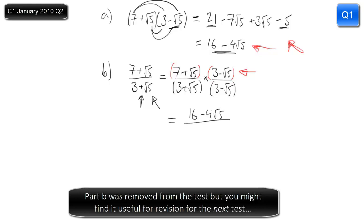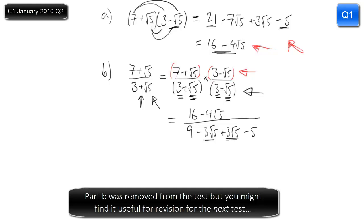For the denominator, I'm going to put a middle step in here — you might not always need this. Think about doing 3 times 3, which gives you 9. Then 3 times minus root 5 is minus 3 root 5. Root 5 times 3 is plus 3 root 5. And root 5 times minus root 5 gives you minus 5. The whole point of what we've done here — multiplying top and bottom by 3 minus root 5 — is that these two middle terms cancel each other out. It's the difference of two squares. So we end up with 3 squared take away root 5 squared, i.e. 9 take away 5.